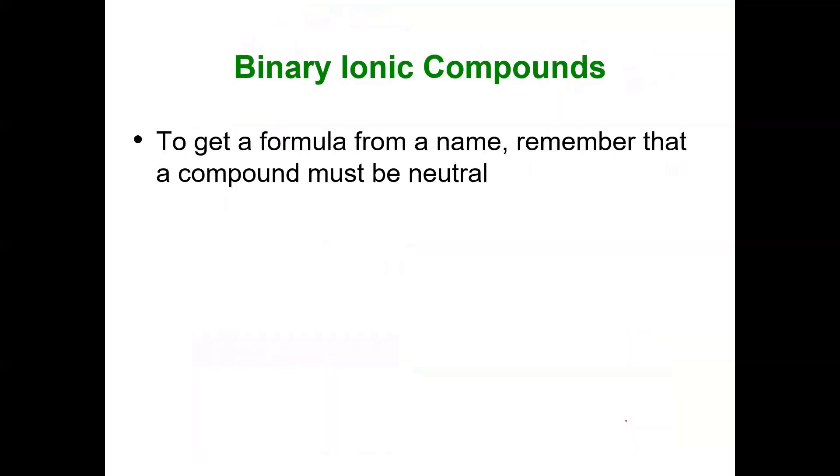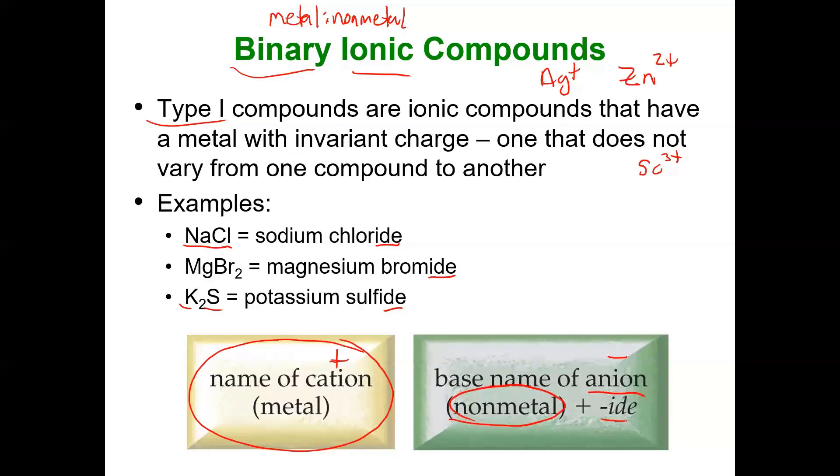But it can get challenging. To get a formula from a name is harder, I think. If you see the formula, you'd be like, oh, that's easy. Sodium chloride. That's magnesium, and that's bromine, magnesium bromide, potassium sulfide. So going from a formula to a name with ionic compounds is cake. You just read it.